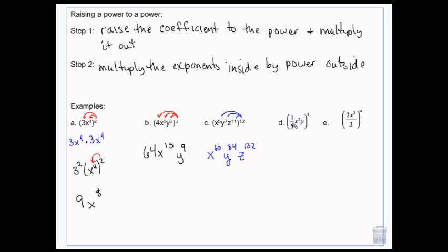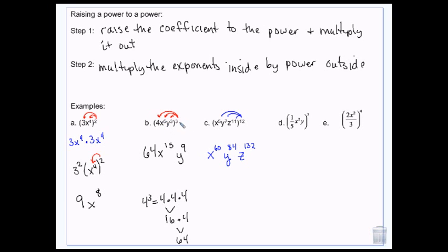When you have a fraction raised to a power — for example, 1 fifth to the 3rd — that is 1 fifth times 1 fifth times 1 fifth. So 5 times 5 is 25, times 5 is 125. That becomes 1 over 125. The key difference: for the variable exponents you multiply the two exponents together, but when you have an actual number, you're raising it to a power — so that tells you how many times you multiply that same number. 4 to the 3rd is 4 times 4 times 4, but x to the 5th to the 3rd, you multiply 3 times 5 because it already has that exponent.